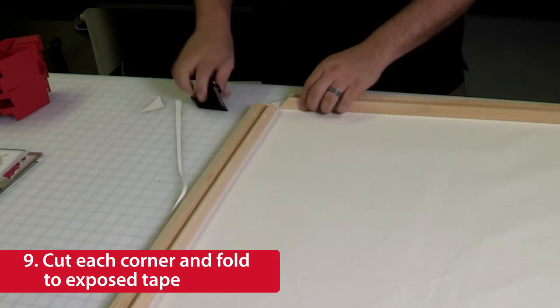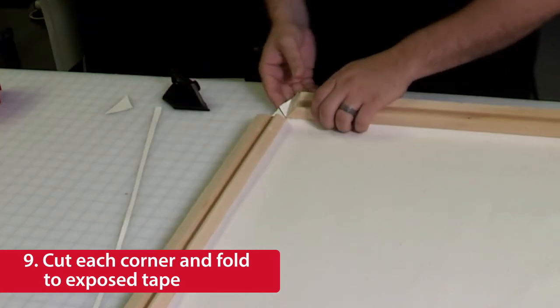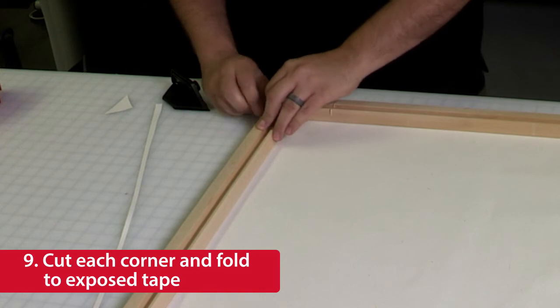Make a cut in each corner as shown here. Then, fold the material in the corners onto the exposed tape at the end of each stretcher bar.